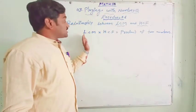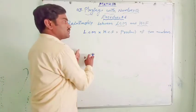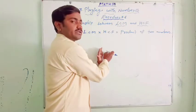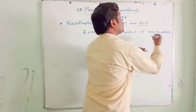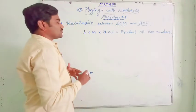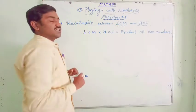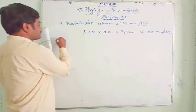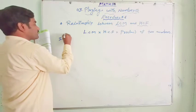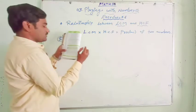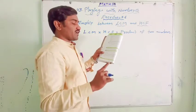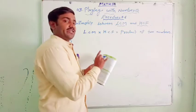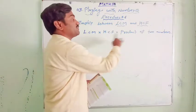That means when you multiply the LCM of two given numbers by the HCF of those two given numbers, the result equals the product of the two given numbers. Let me solve some problems based on this relation in this exercise. The first problem: find the LCM and HCF of the following numbers and check their relationship. We have to find out the LCM and HCF, then verify the relation between these two.